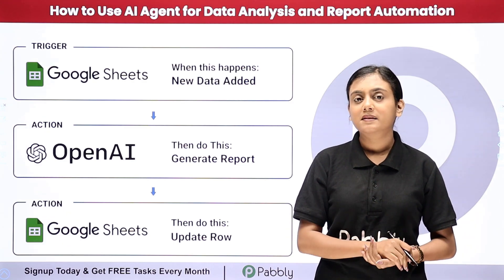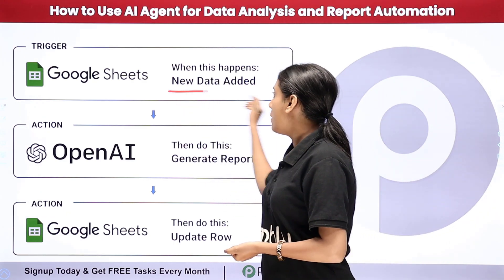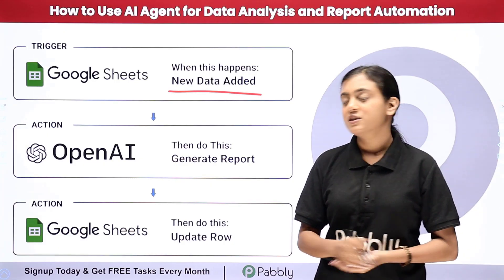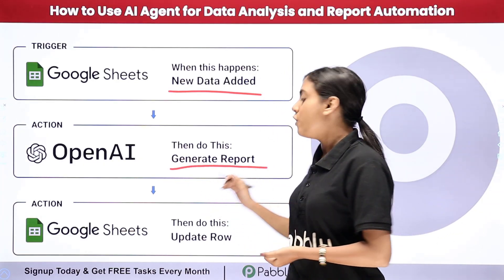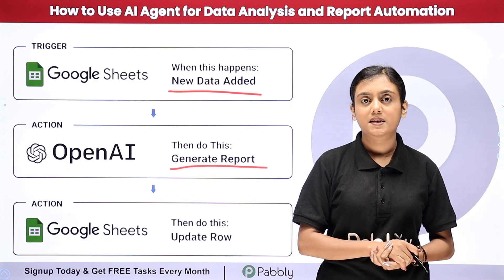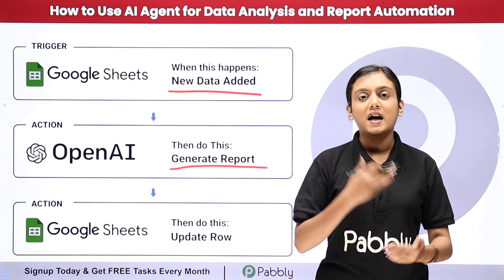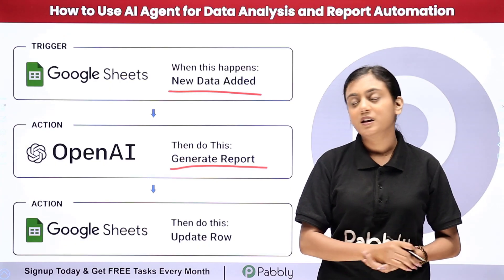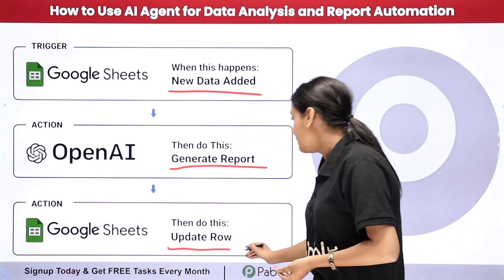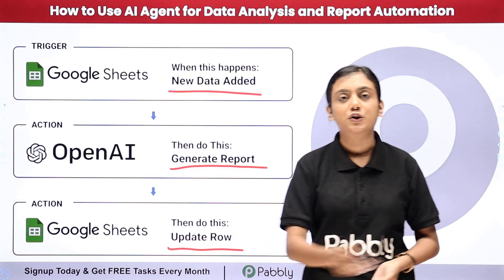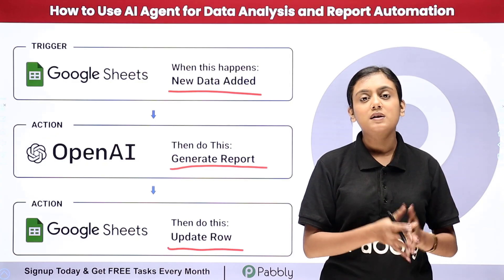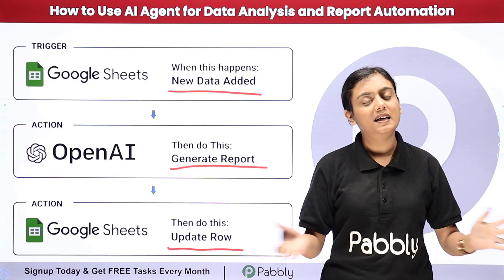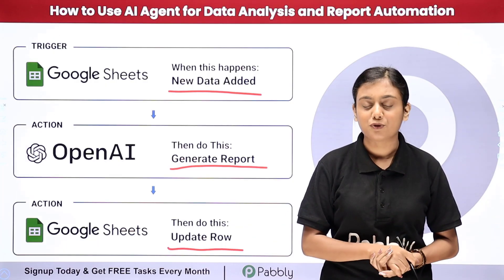As soon as I enter the data of the new product's weekly performance in my Google Sheets, automatically an AI agent is going to do the analysis of the weekly product performance. And as soon as the report is generated, automatically in my same Google Sheets the data of that generated report is going to be updated. So now if you want to learn how to create this AI agent for yourself, let me take you to my screen.